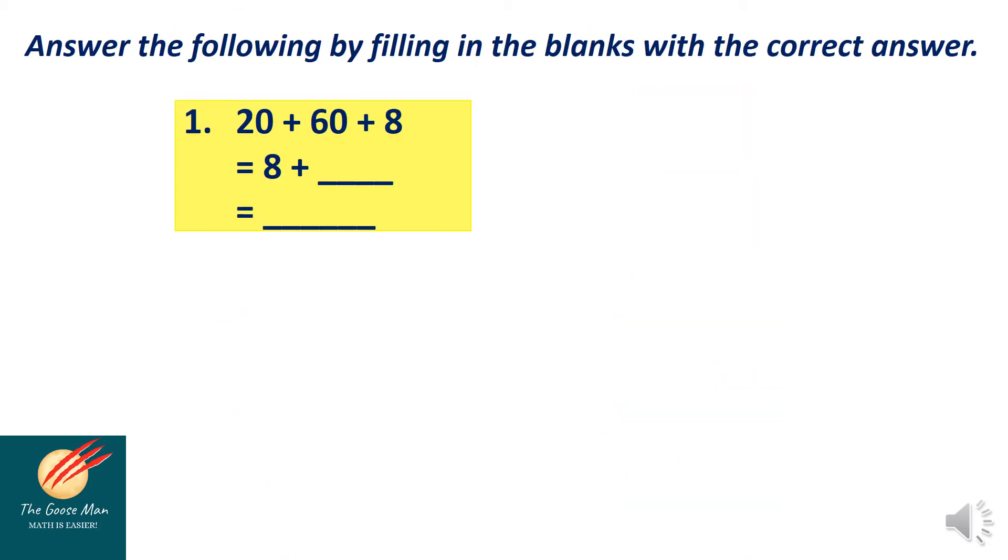Alright, let's move on to the next exercise. Answer the following by filling in the blanks with the correct answer. I have number one: 20 plus 60 plus 8. I can add 20 plus 60, which is actually 80. So 8 plus 80 is equal to 88.